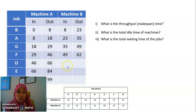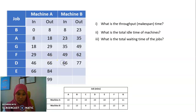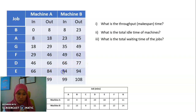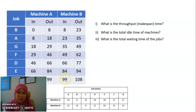Compare 62 and 66 — 66 is biggest, so put 66. 66 plus 11 (job D, Machine B) is 77. Compare 77 and 84 — choose 84. 84 plus 10 (job E, Machine B) is 94. Compare 94 and 99 — choose 99. 99 plus 9 (job C, Machine B) is 108. We have completed the whole table.